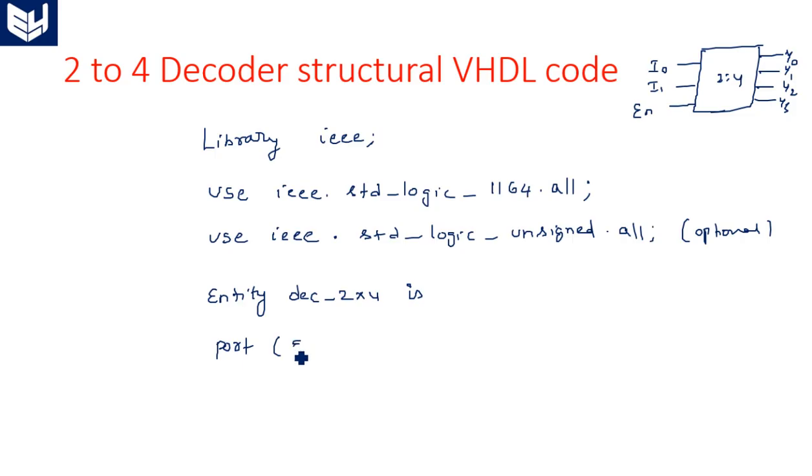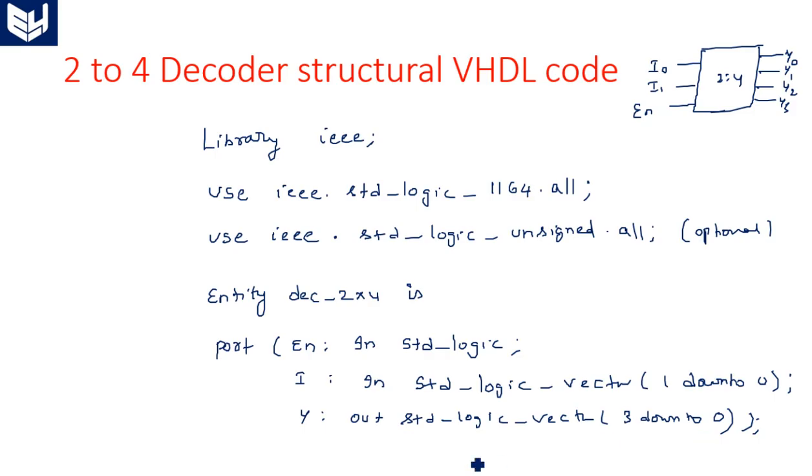For that we are taking enable in std_logic, and I is also input mode std_logic_vector. It is a vector of size 2 bit, 1 downto 0. And four outputs are there: Y out std_logic_vector of 3 downto 0. This is port and dec_2to4. This is the part of entity.